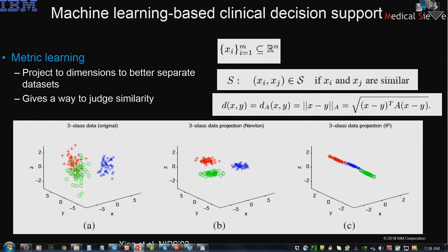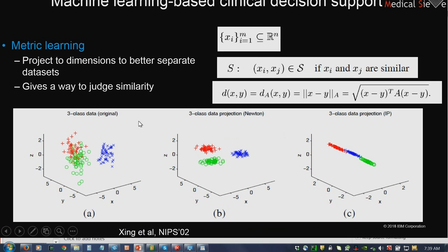When you do clustering, there is also a lot of information about how one can project into relevant dimensions so that distances preserve meaningful separation. This is where metric learning came about — projecting dimensions to better separate the datasets. An example from Eric Xing's work at NIPS showed good separation through metric learning, where the projection space itself is learned. This becomes important when you try to do patient comparisons for patient similarity.